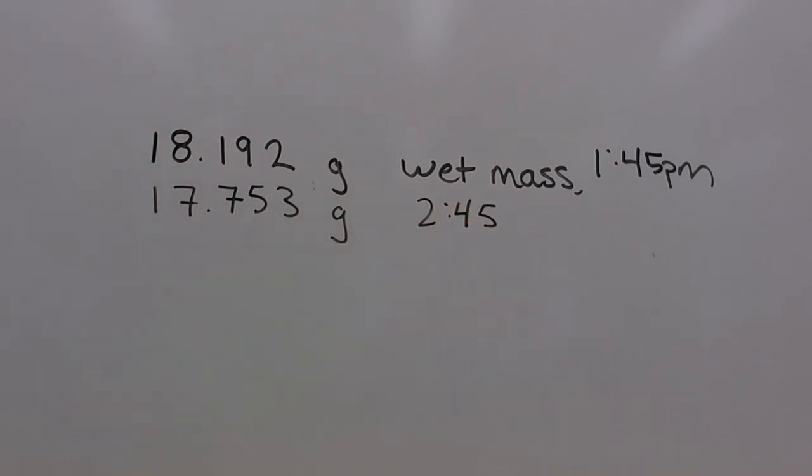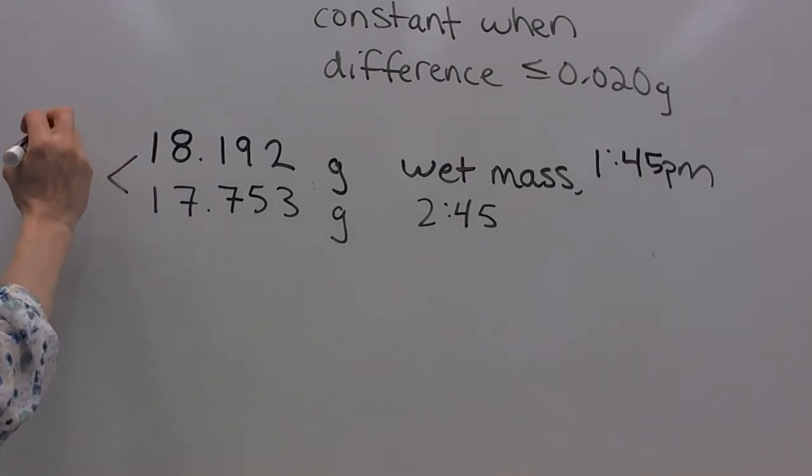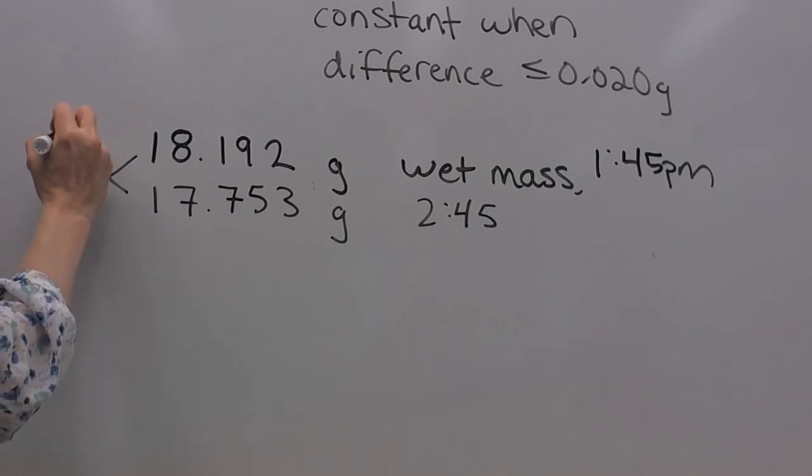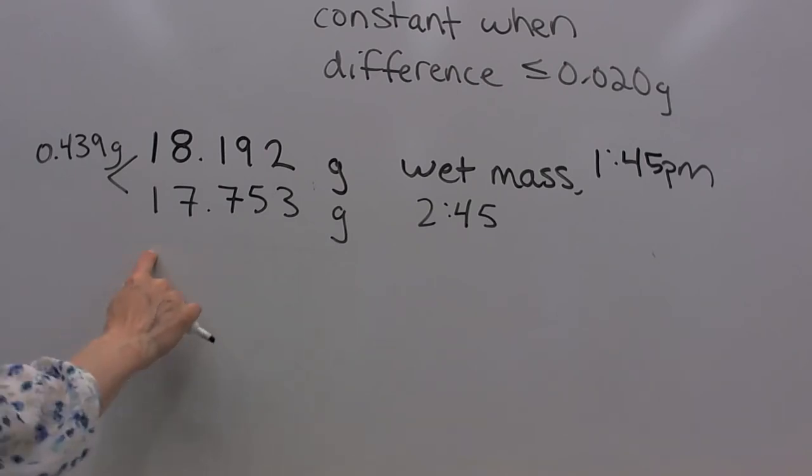Now we want to look for a difference of less than 0.020 grams, less than or equal to. So we need to do some basic math. This difference, if I subtract the second from the first, is 0.439 grams. That's a lot more than 0.020 grams. So I must need to keep drying and get another measurement and keep doing the subtraction between the last two masses until I meet that benchmark.